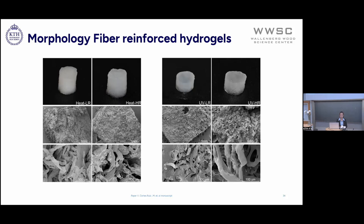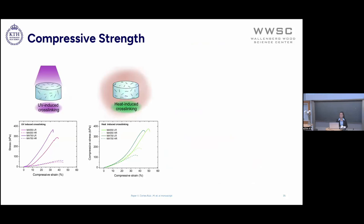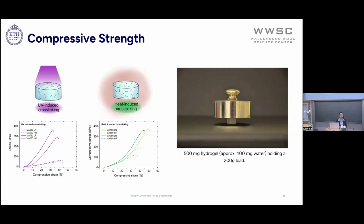We needed more information to know what's happening, so we tried to compress them to see the differences. In the case of UV-induced crosslinking, the polymerization is unlikely to occur within the fibers, but there are very long polymers inside that could act as plasticizers, making the fibers very soft. For heat-induced crosslinking, we get a very different performance — even inside of the fibers we expect some crosslinking, and therefore the material looks stronger. To give you an idea of how strong these materials can be: this is a 500 milligram hydrogel holding a 200 gram weight, and the hydrogel is made of 400 milligrams of water — a very tiny amount of material holding such a big weight.